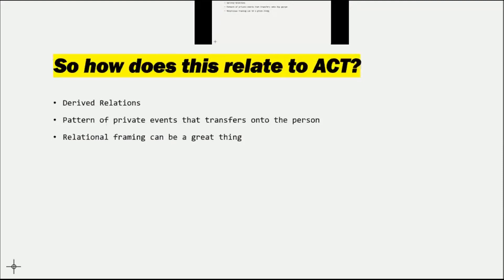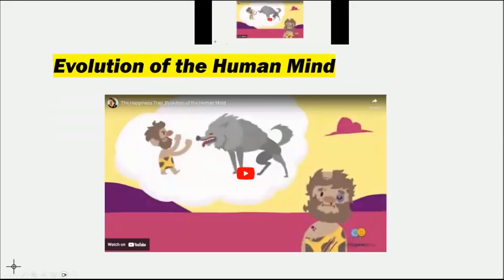This creates a pattern of private events that will transfer into the individual and make it harder for them to live their life as fully as possible. Relational framing can be great — it allows us to plan, invent, compare, and analyze — but it also makes things difficult because it produces some of these challenging private events that impact how we see ourselves and our environment. I also have some short videos because with some of these illustrations they're going to provide a lot more context.